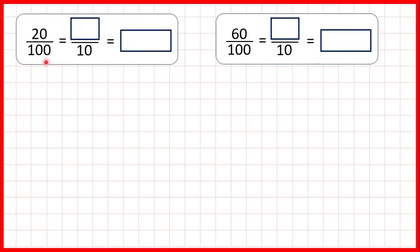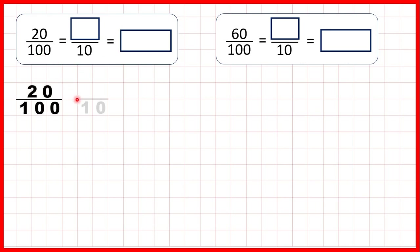For this first question we have 20 hundredths and we need to find an equivalent fraction with a denominator of 10 and write the fraction as a decimal. First let's take our 20 hundredths and see if we can find an equivalent fraction with a denominator of 10.